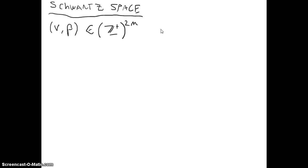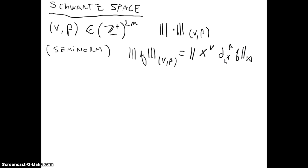We will denote the seminorm in this way: ρ_{ν,β}. This is a seminorm, it will not have the first property of the norm, and will be defined as ρ_{ν,β}(f) equals the norm of x^ν ∂^β f in L^∞.